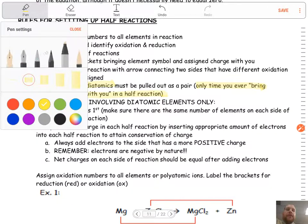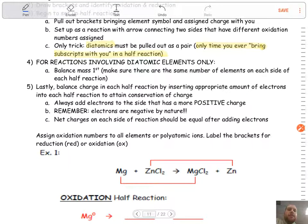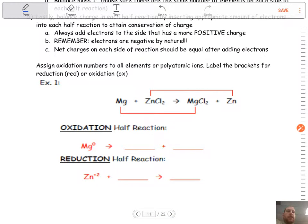That's a big topic here, something to remember: diatomics is the only time you bring a subscript with you in a half reaction. Step four: for reactions involving diatomics, balance the mass first. Then balance the charge with those electrons on both sides. So save the electrons until the end. Get everything balanced in terms of mass first and then save charge until the end.